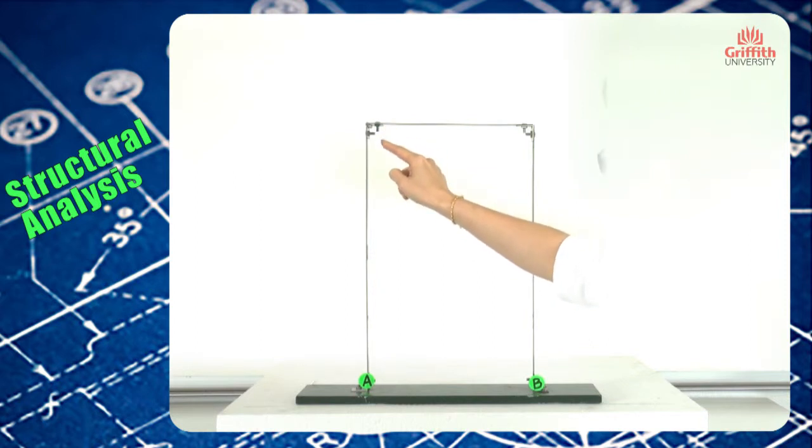Before deformation it was 90 degrees here, but after deformation we should expect that the angle between the beam and the column should no longer be 90 degrees.